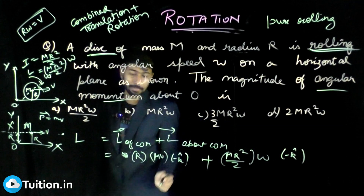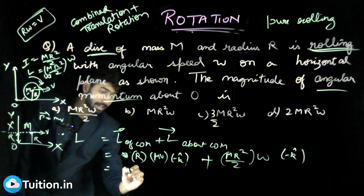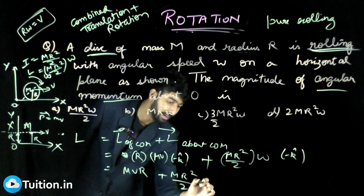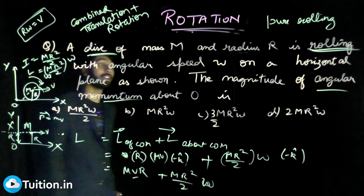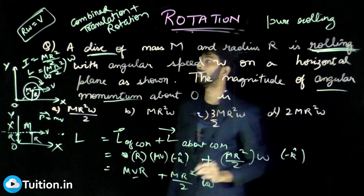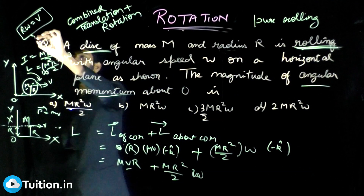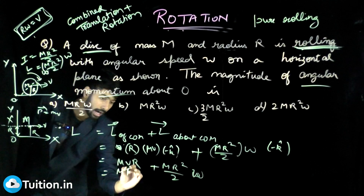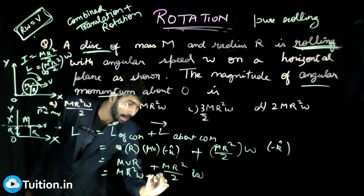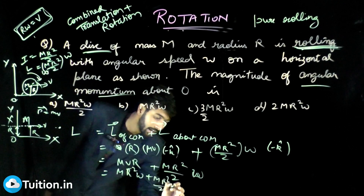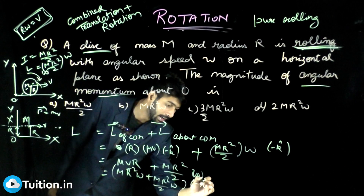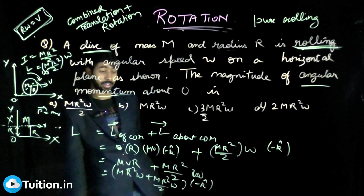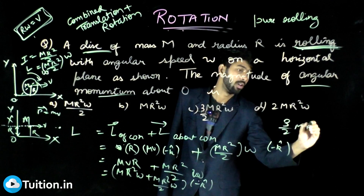Both components are along the same direction, so we can simply add them: L equals m·v·r plus mr²/2·omega. Using the pure rolling condition v equals r·omega to eliminate v, this becomes m·r²·omega plus mr²/2·omega, which gives the final magnitude of 3/2 m·r²·omega.